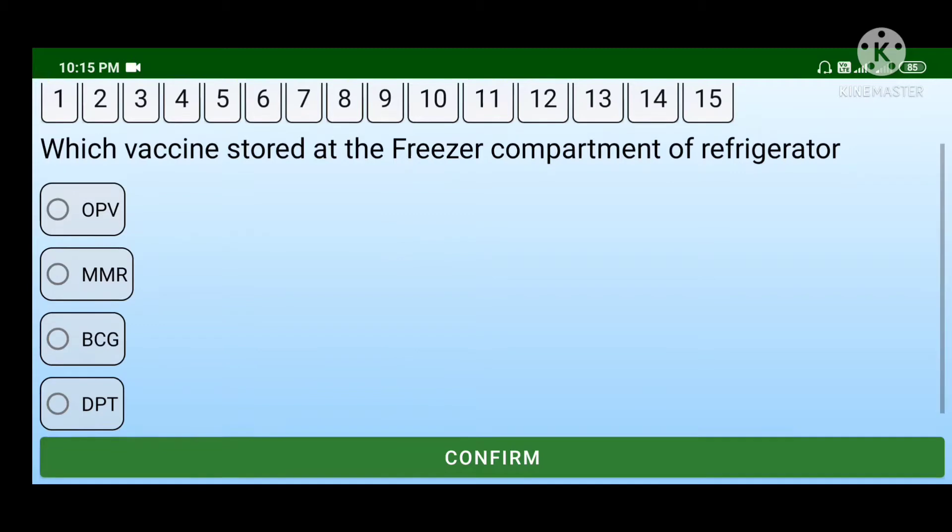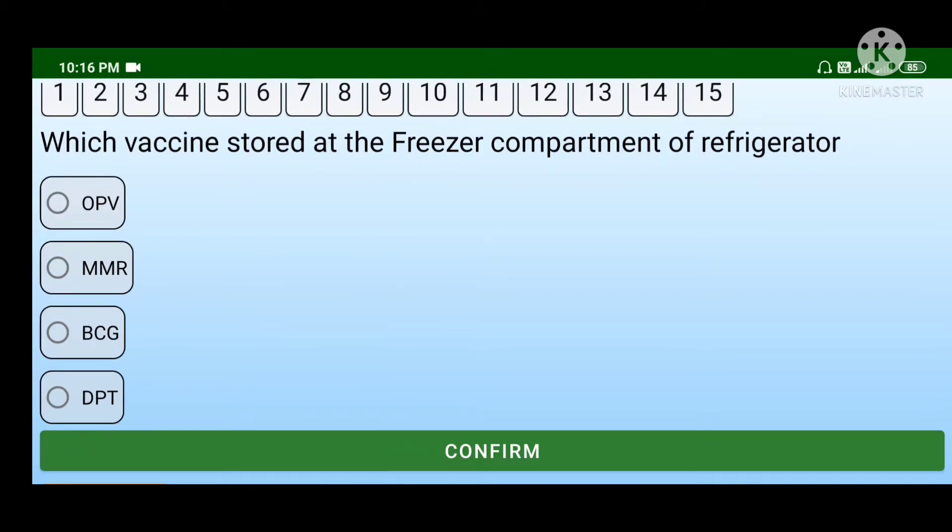As you all know, the cold chain system has many compartments, including the freezer compartment. The correct answer is OPV. OPV is stored at minus 20 degrees Centigrade in the freezer compartment.